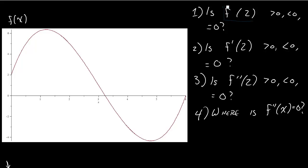So f of 2 — is f of 2 positive, negative, or equal to zero? Well, f of 2, if I came to this graph I'd see that if I plug in 2 I get an output somewhere between 4 and 5. So is this positive, negative, or greater than zero? Well, 5 is positive, so I'd say f of 2 is positive. So I figure out what f is.